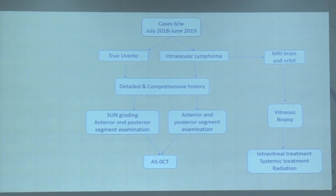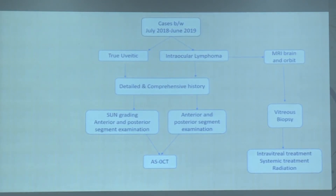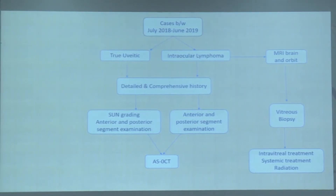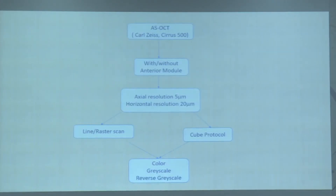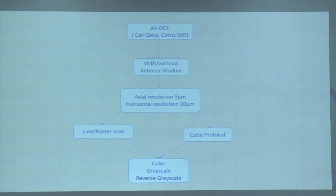We had a prospective interventional study dividing patients into true uveatic and intraocular lymphoma groups. The lymphoma patients underwent complete MRI brain and orbit, biopsy, and depending on whether CNS disease was present or absent, underwent localized or general treatment. True uveatic cases were graded according to SUN classification, then all underwent ASOCT.